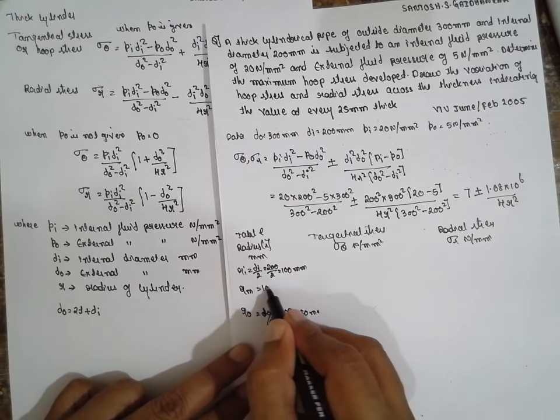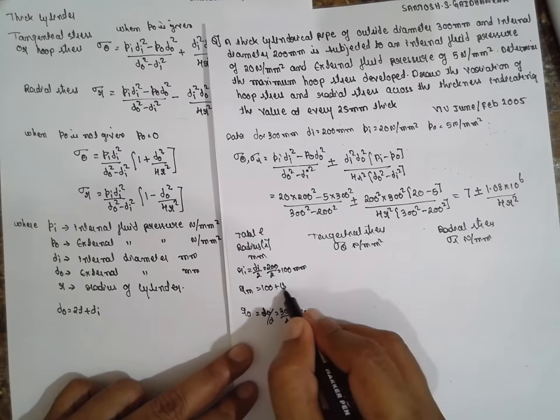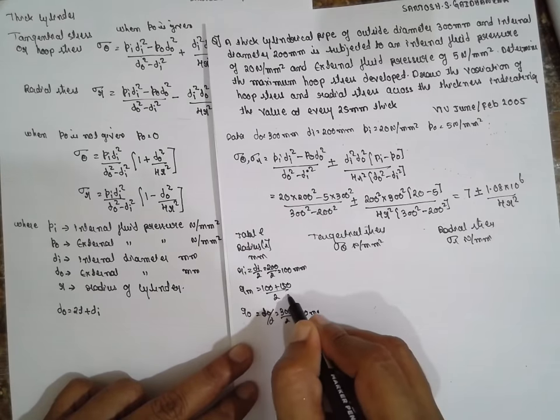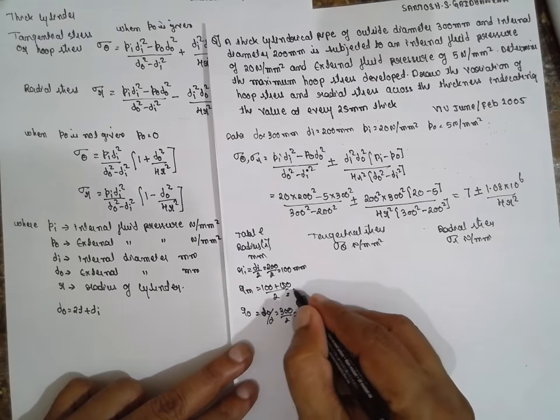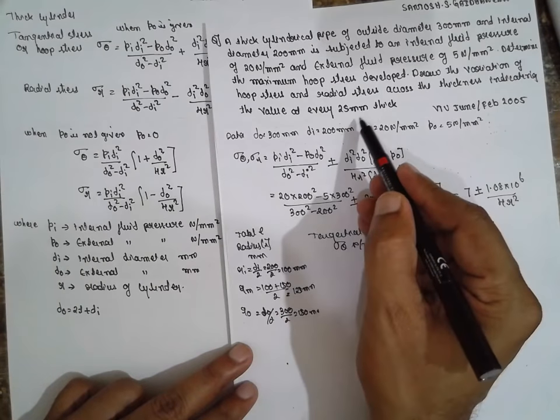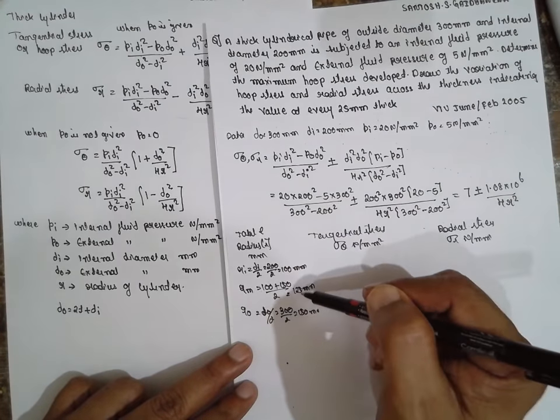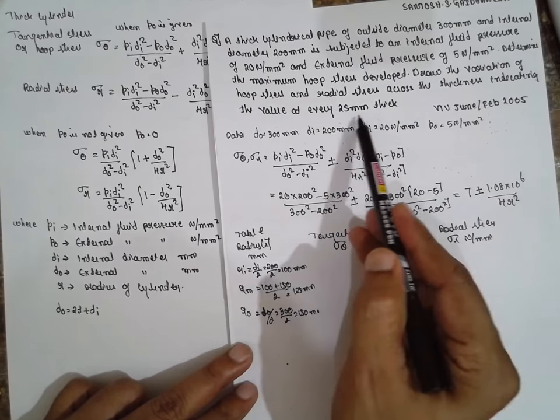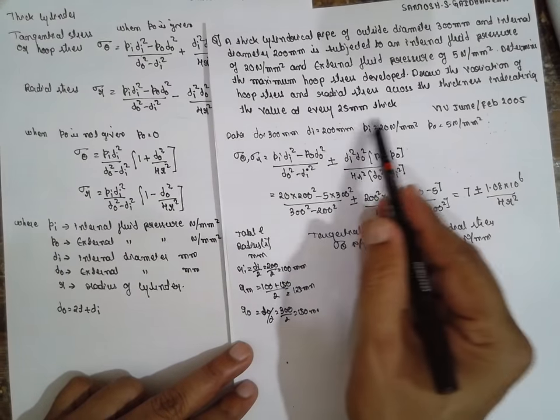Now 100 plus 150 divided by 2, you will get 125 mm. That means 25 mm interval. 100, 125, again 25. That is the meaning of this part.